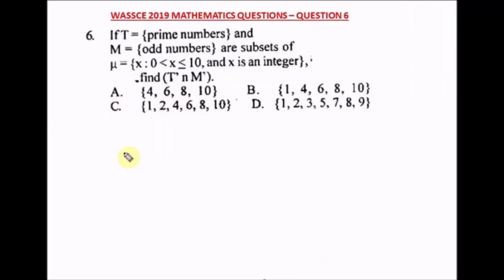Question six of the WAEC 2019 mathematics past question. Given: T = prime numbers, M = odd numbers, both subsets of the universal set μ = {x : 0 < x ≤ 10, x is an integer}. Find T′ ∩ M′. First, let's identify the universal set: μ = {1, 2, 3, 4, 5, 6, 7, 8, 9, 10}.